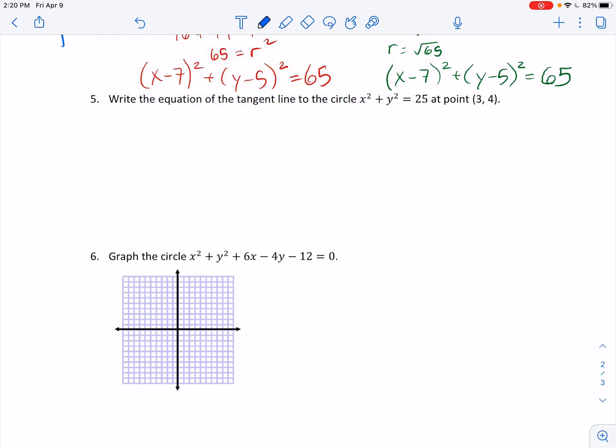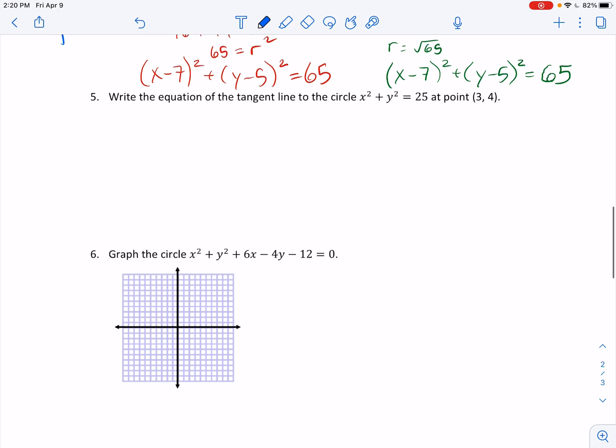Moving on. Number five. Write the equation of the tangent line to the circle x squared plus y squared equals 25 at the point 3, 4. So what I know from here is I know that this is a circle with the center at the origin radius of 5. So center at the origin radius of 5.